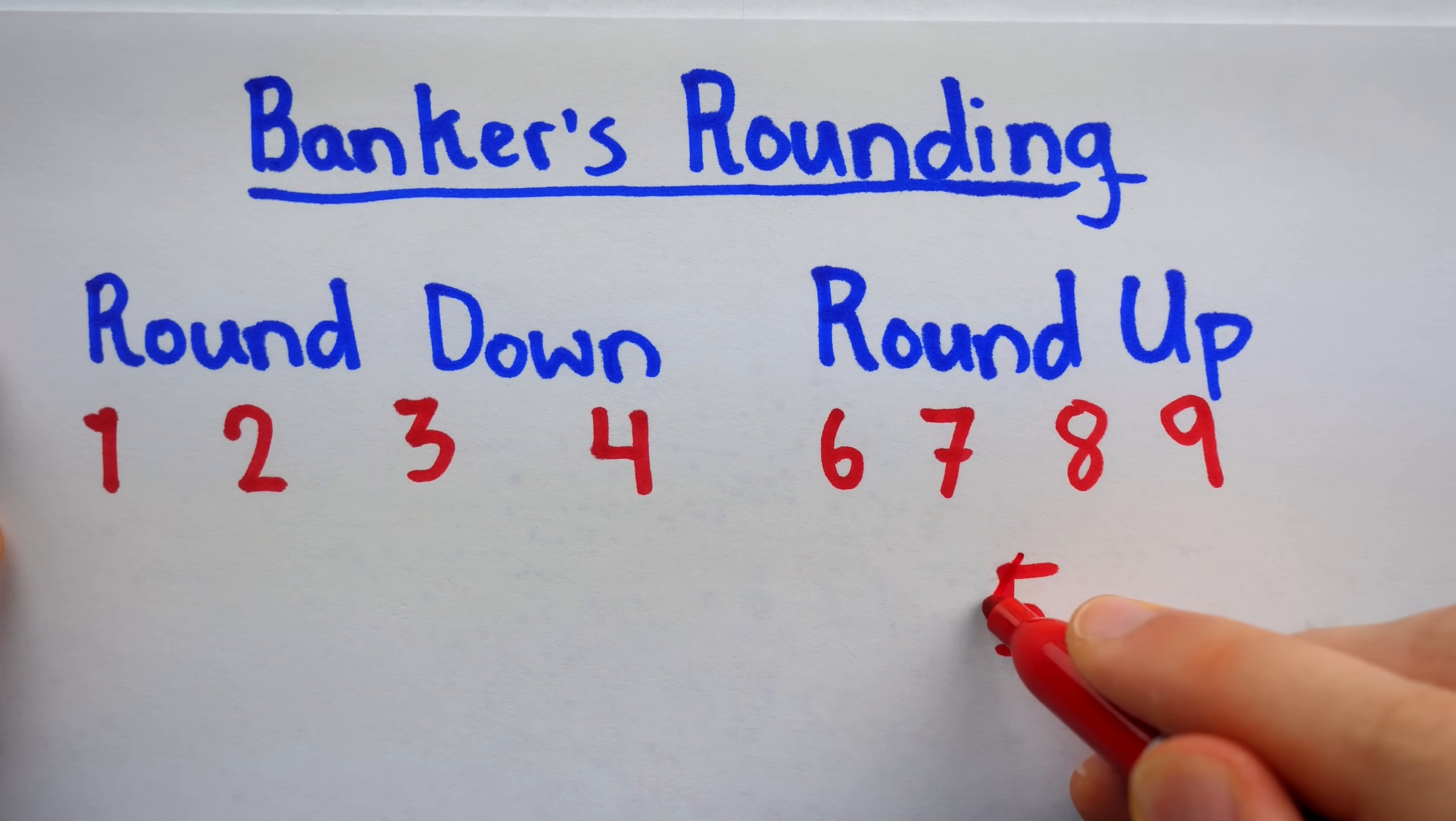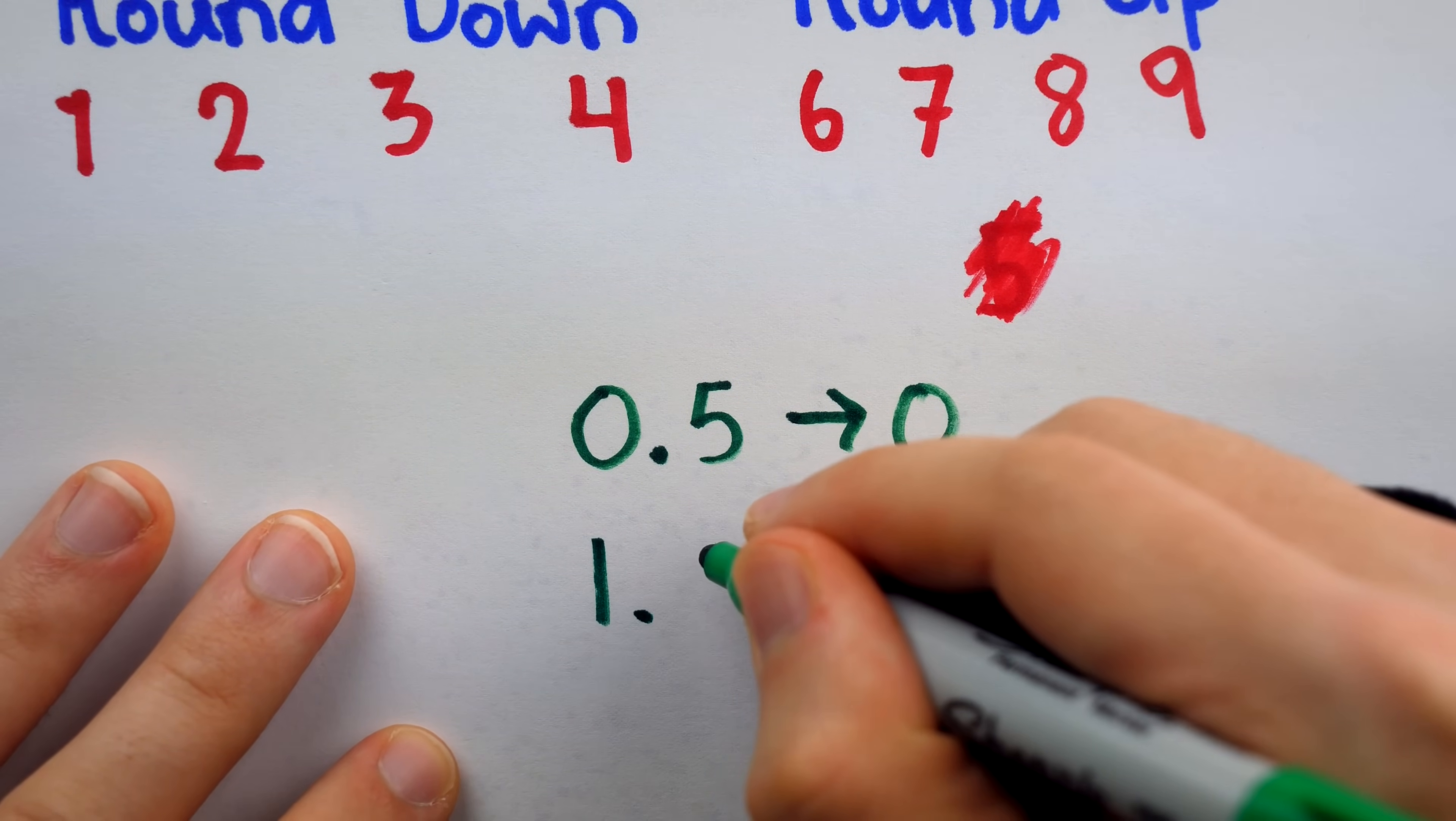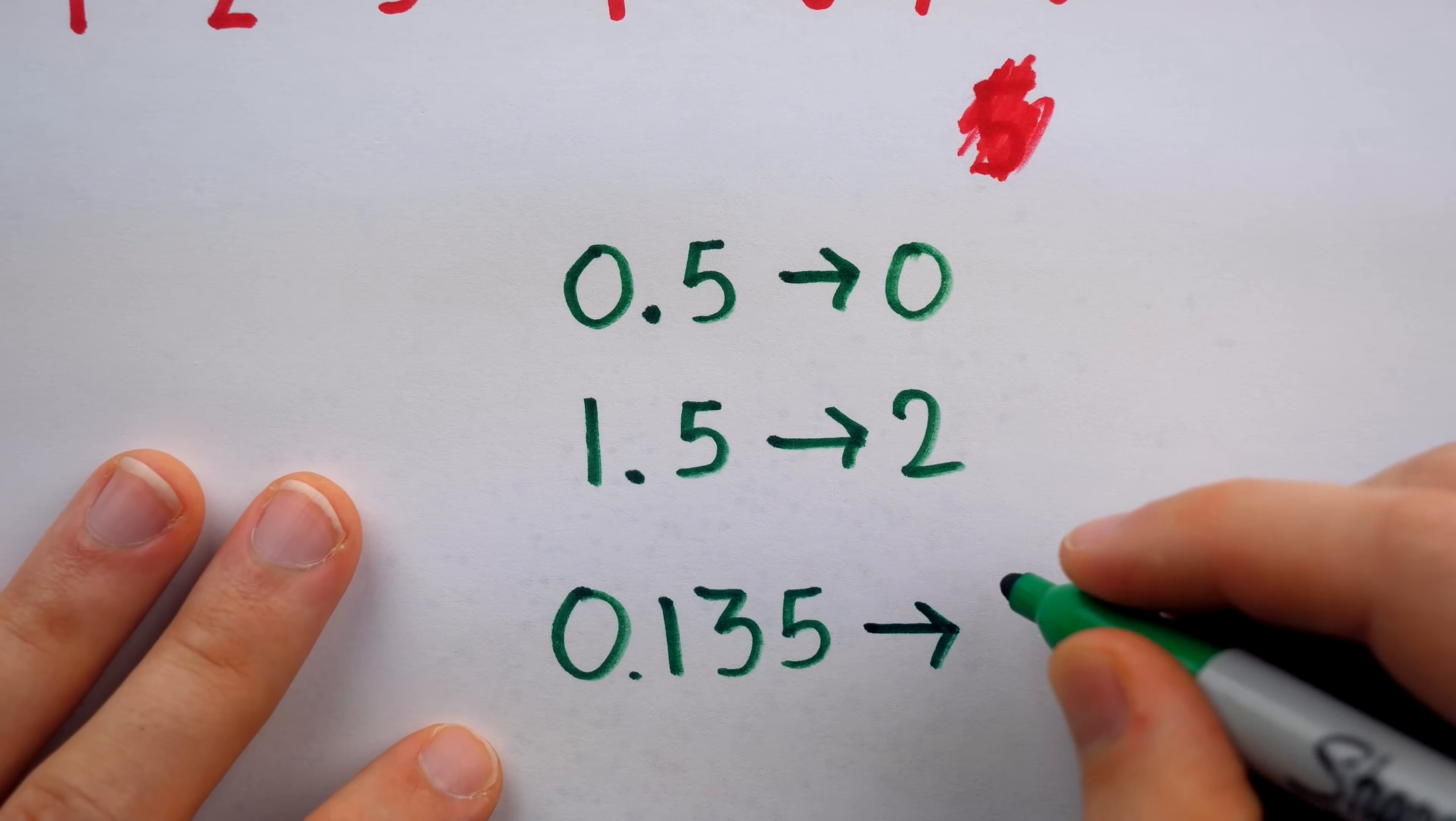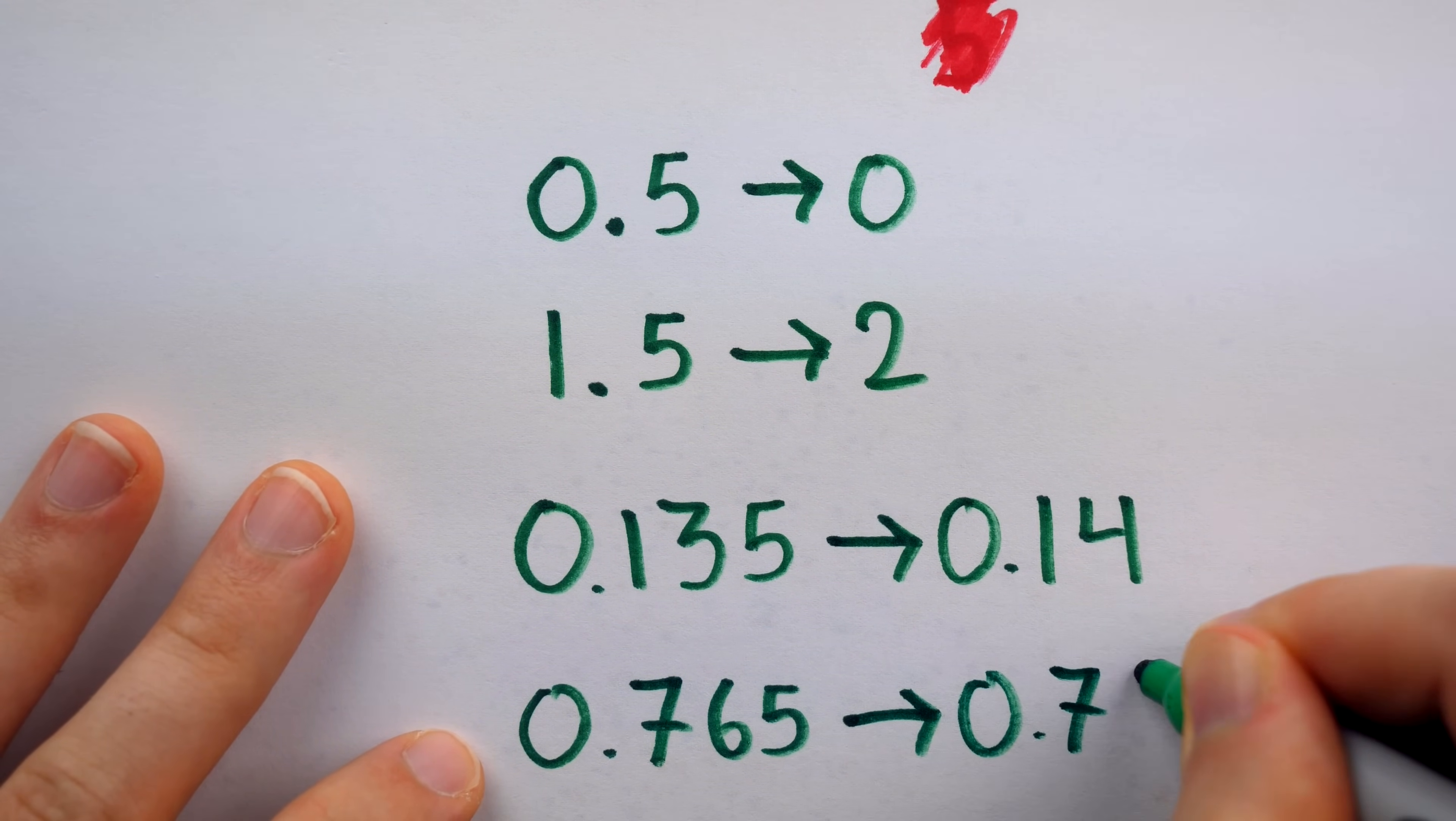To keep things fair, the rounding of 5 can be made to depend on the previous digit, and that's how banker's rounding works. If the previous digit is even, like the digit 0 in 0.5, then we round down to that even, so we'd round down to 0. But if the previous digit is odd, like 1 in 1.5, then we round up to 2. Again, we round to the even. What about a number like 0.135? If we want to round this to the hundredths place, well, the previous digit is 3, so we're going to round up to get to that nearest even of 0.14. Whereas if we have something like 0.765, and we want to round to the hundredths place, then we would round down because now the nearest even is 0.76.